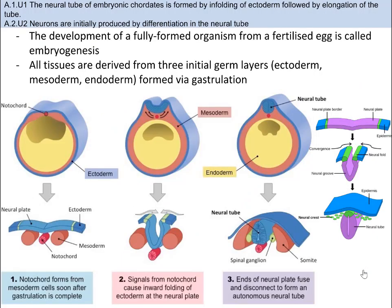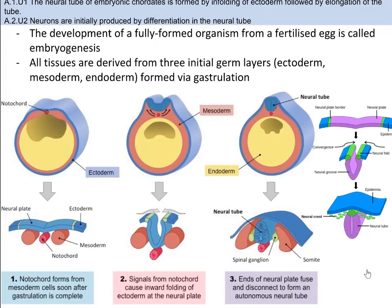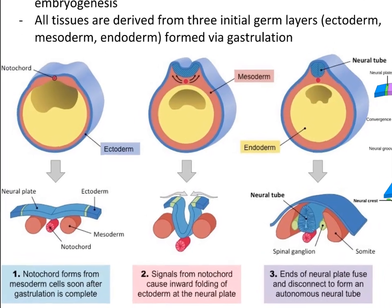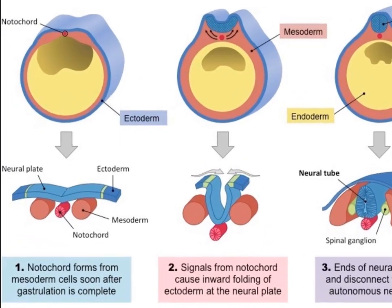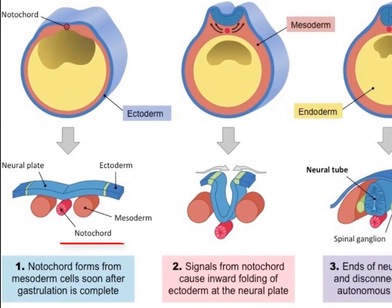You have now arrived at your destination: a gastrulated embryo. These three germ layers — the endoderm, mesoderm, and ectoderm — give rise to all tissues in the organism, and I mean everything. Right in the middle of all this, you can see the notochord, which as I just mentioned, is one key characteristic of chordates.